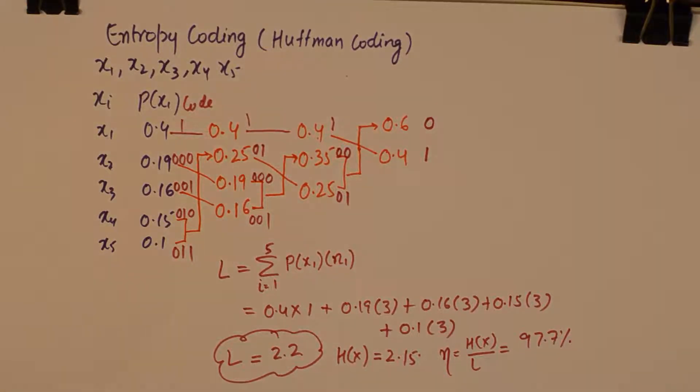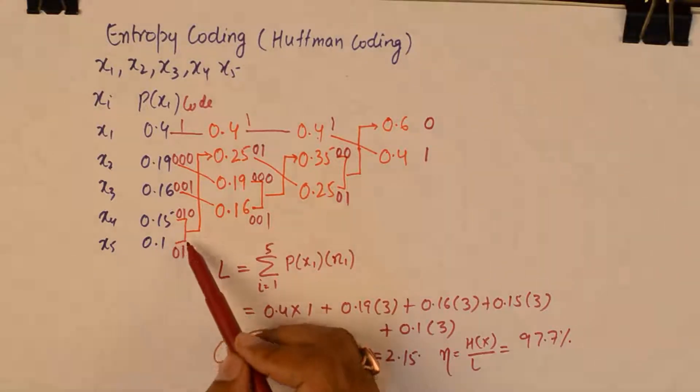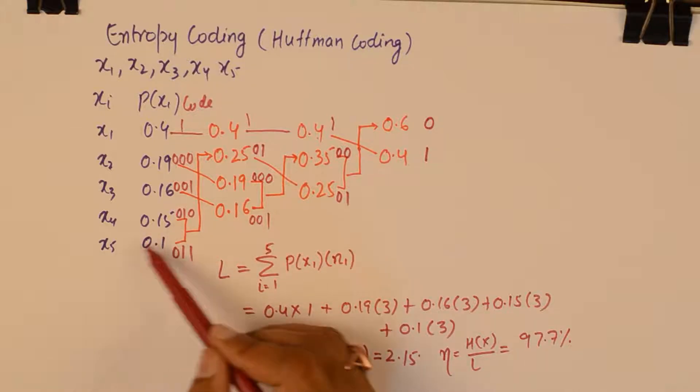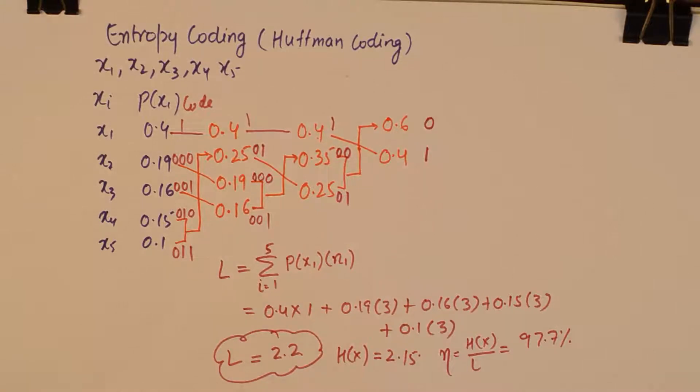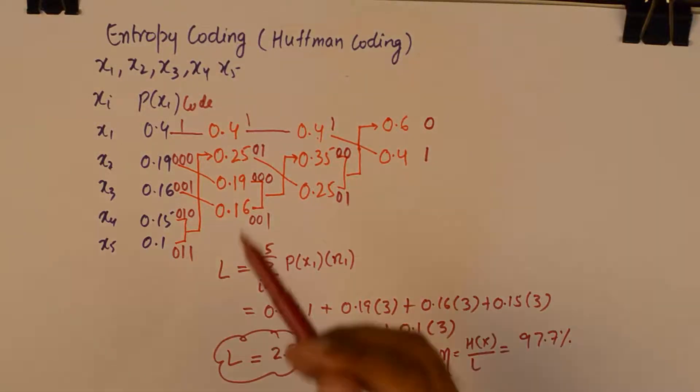And I hope the process of finding the code with the Huffman coding technique is clear. You simply need to add up the probabilities of the least probable symbols and place them onto the next column appropriately.